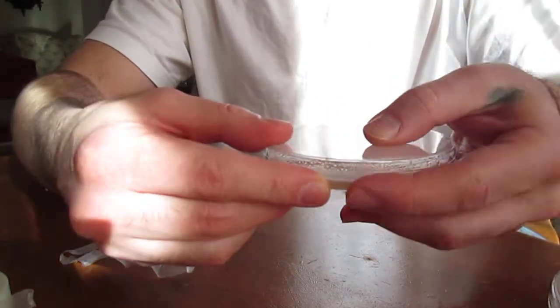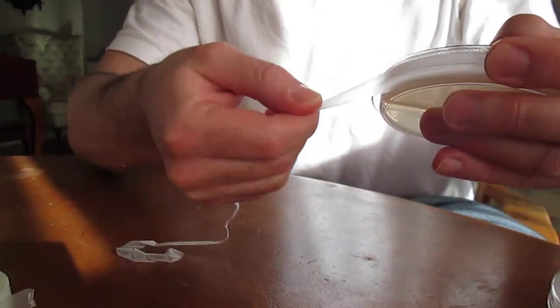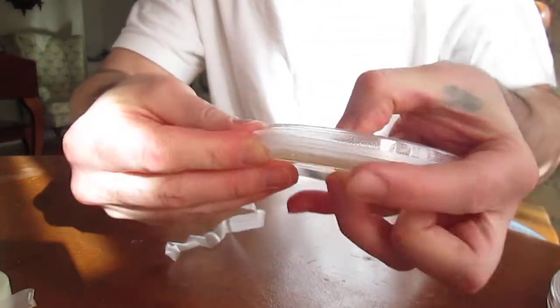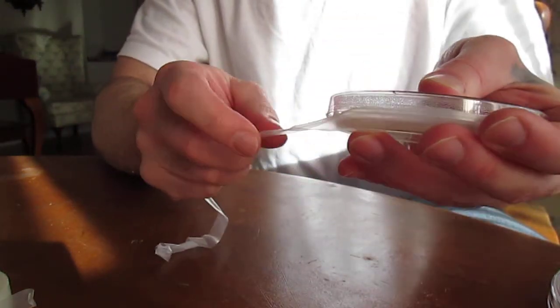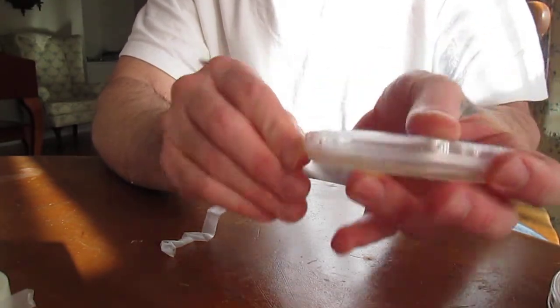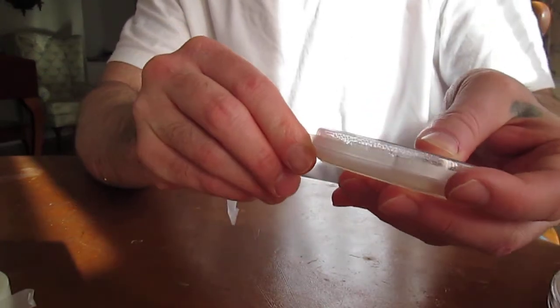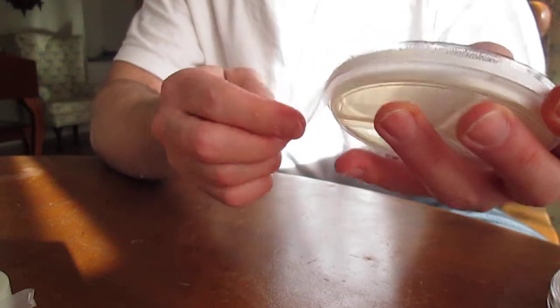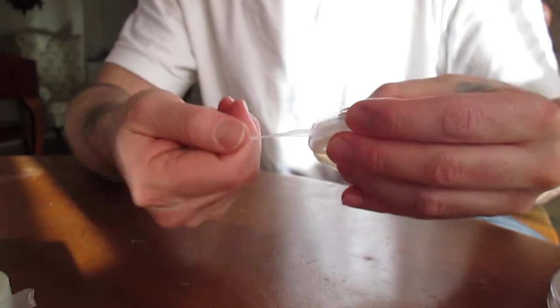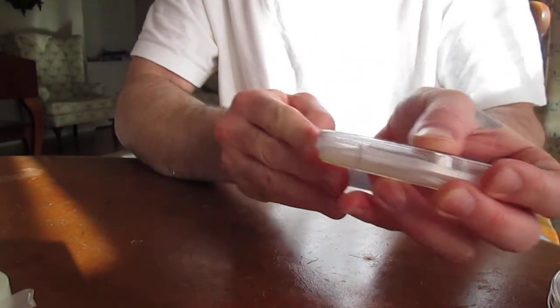Pull it all the way around the dish two times. One time you would think would be enough, but it's not. One time will still be a little bit porous and allow things to get in there. So two times will keep it sterile. Just pop it on, pull it tight and swing it around.